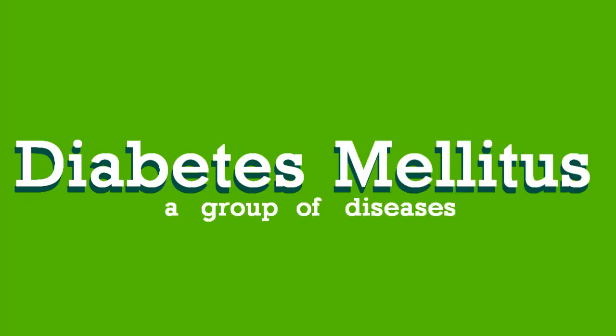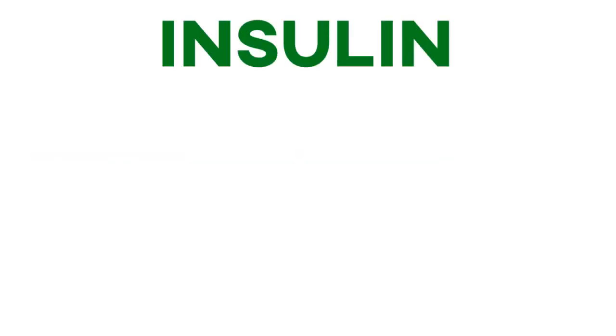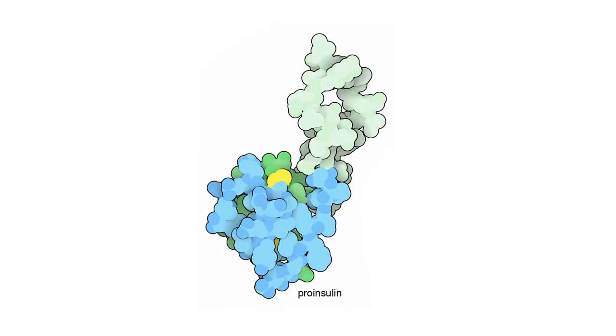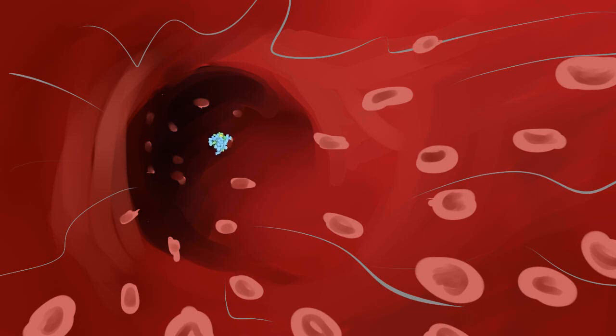Diabetes mellitus is a group of diseases caused by a malfunction in the insulin pathway. There are two types of diabetes: type 1 and type 2. The process to make insulin starts with a translation to make a larger and therefore more stable molecule called proinsulin. An extra piece of proinsulin is cleaved to make the smaller, less stable insulin molecule.